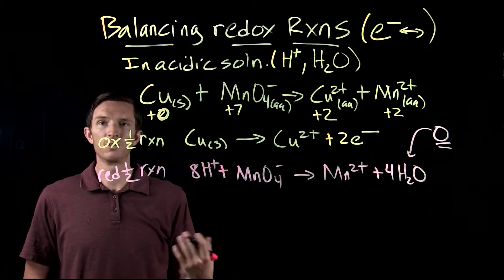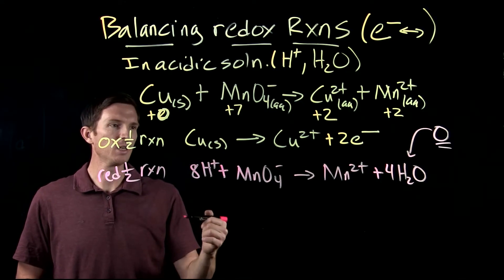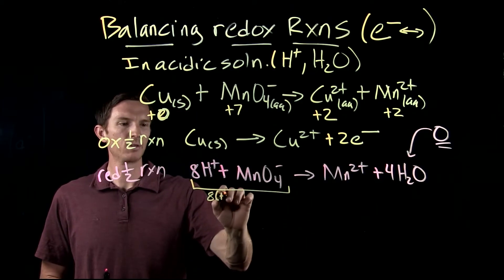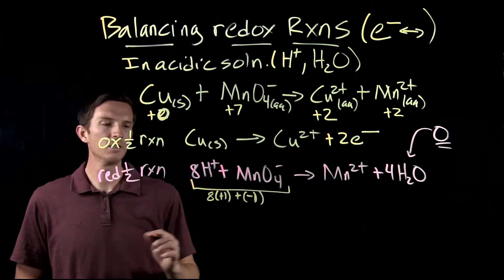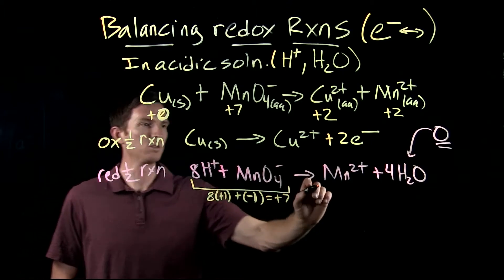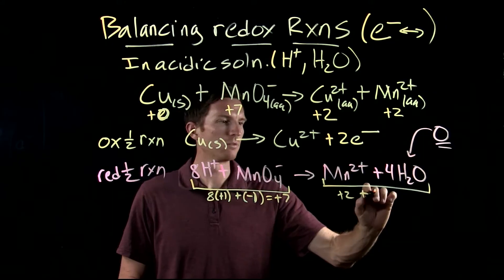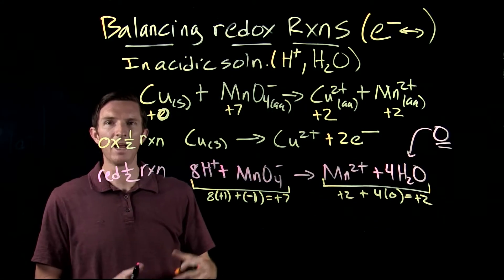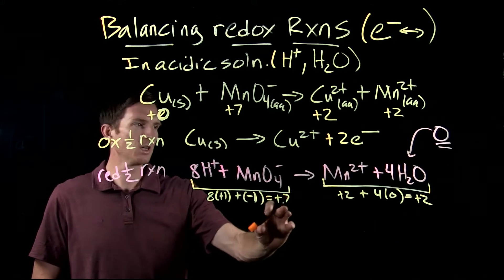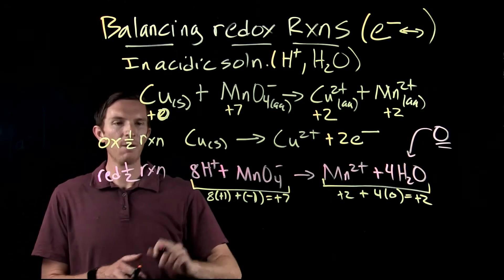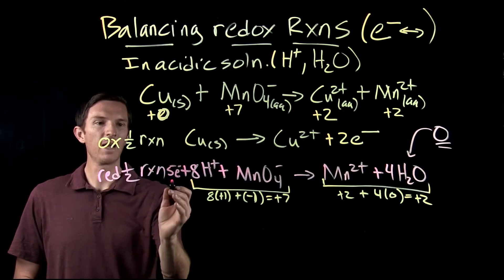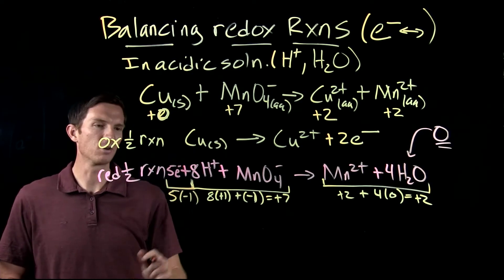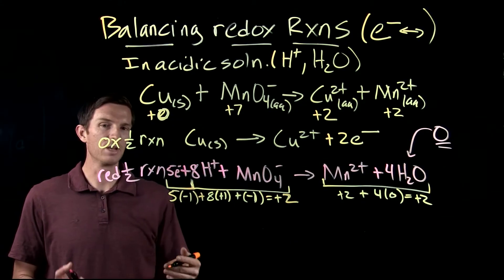The final step is to balance charge by adding electrons. The total charge on the reactant side is eight times plus one for the H⁺ ions, plus negative one for the permanganate, giving plus seven. On the product side we have plus two for Mn²⁺ and zero for water, giving plus two. To bring plus seven down to plus two we add five electrons to the reactant side: five times negative one plus seven equals plus two. The reduction half reaction is now balanced for charge and mass.